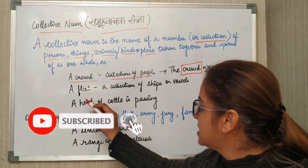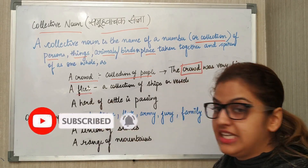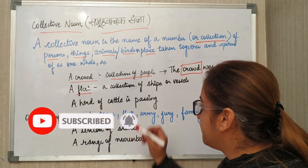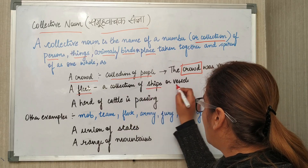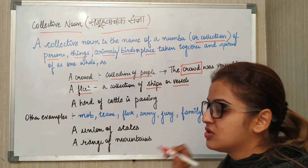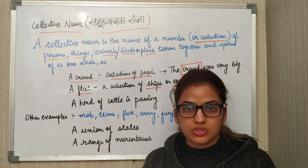Next is a fleet. A fleet is called a collection of ships or vessels — they are called vessels, boats, or big boats.